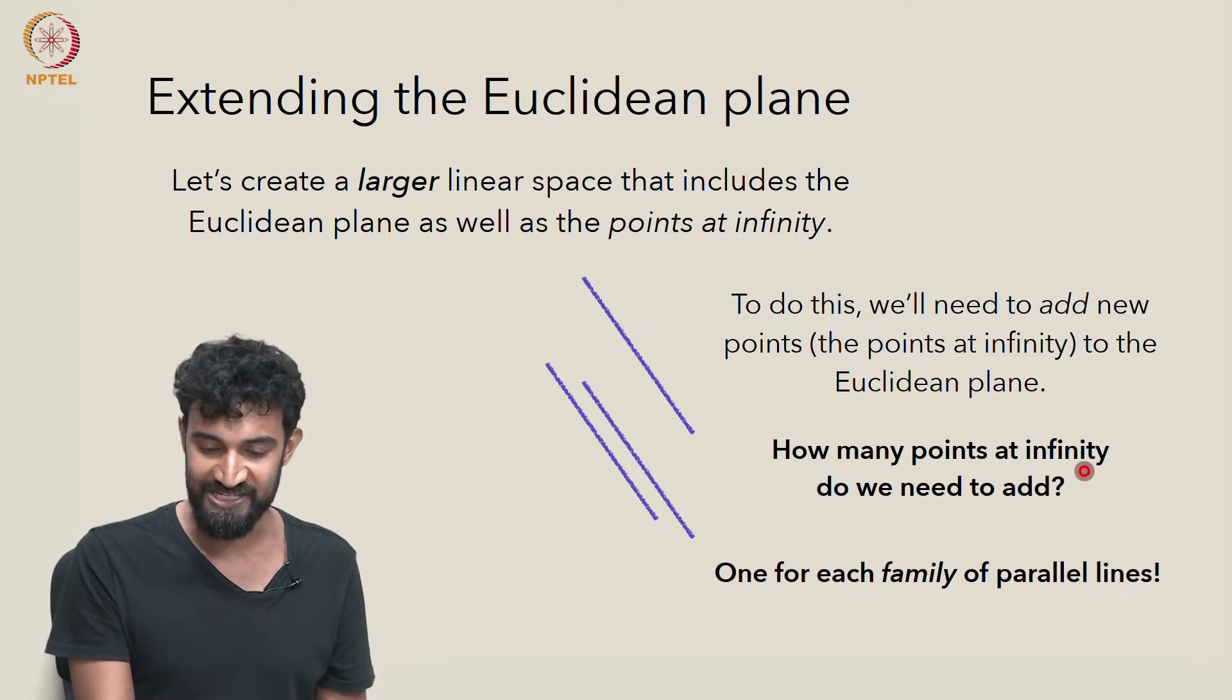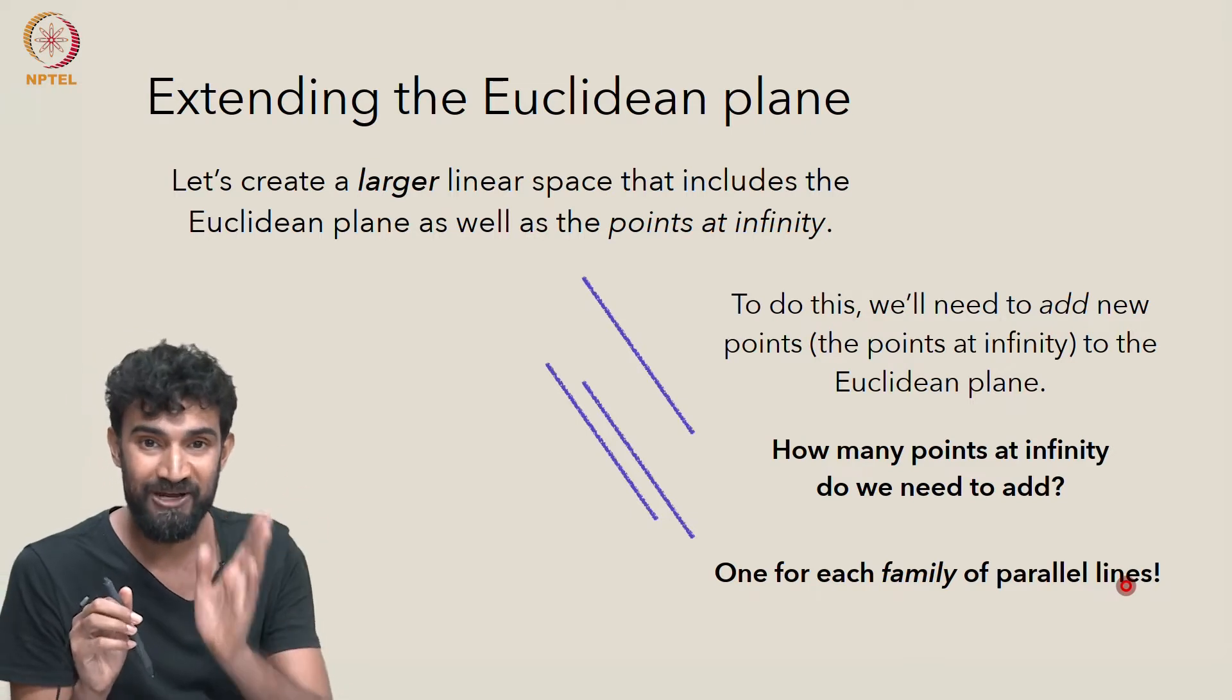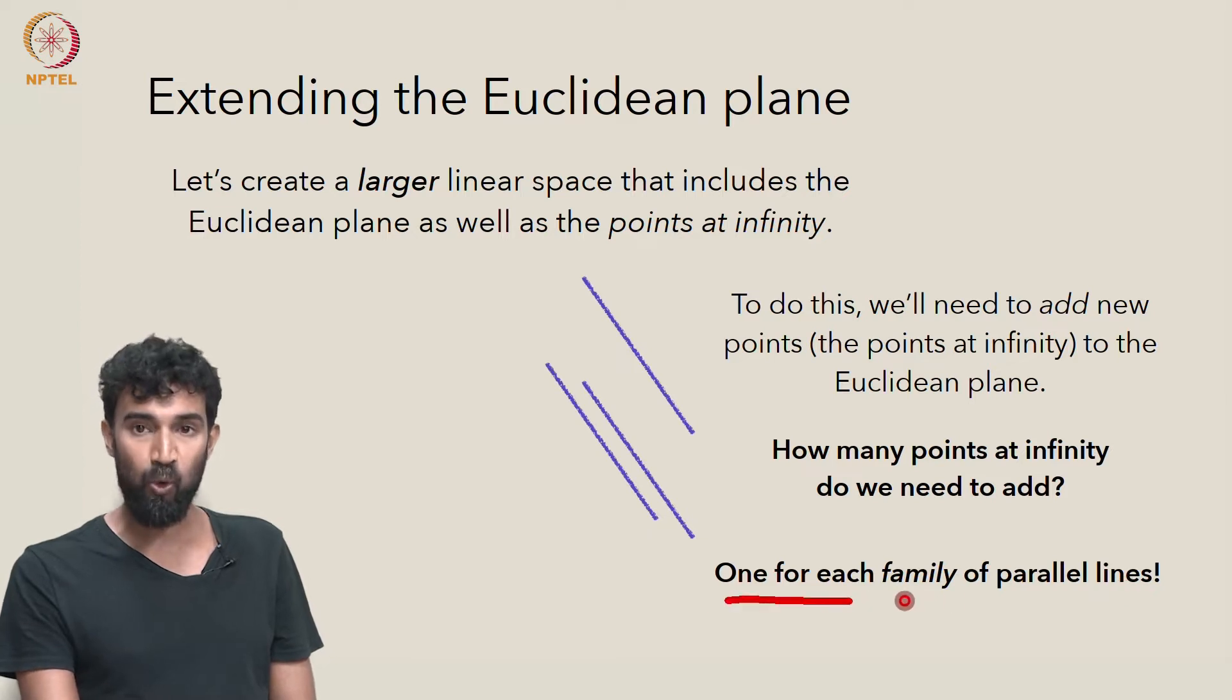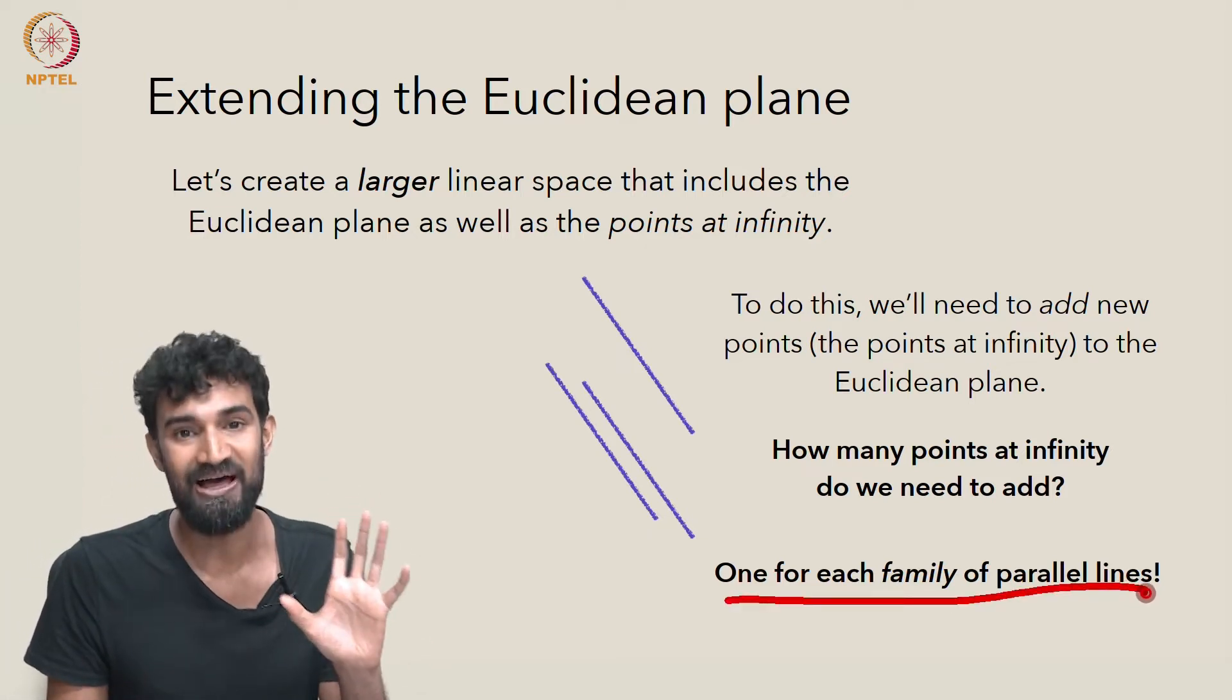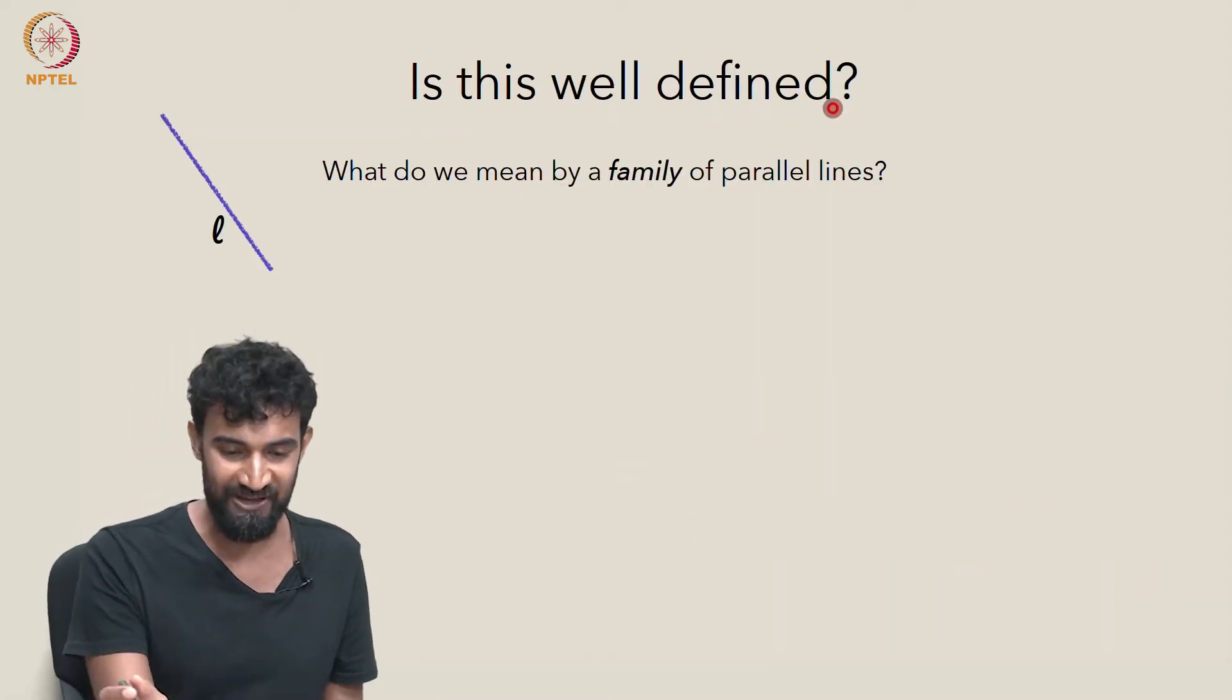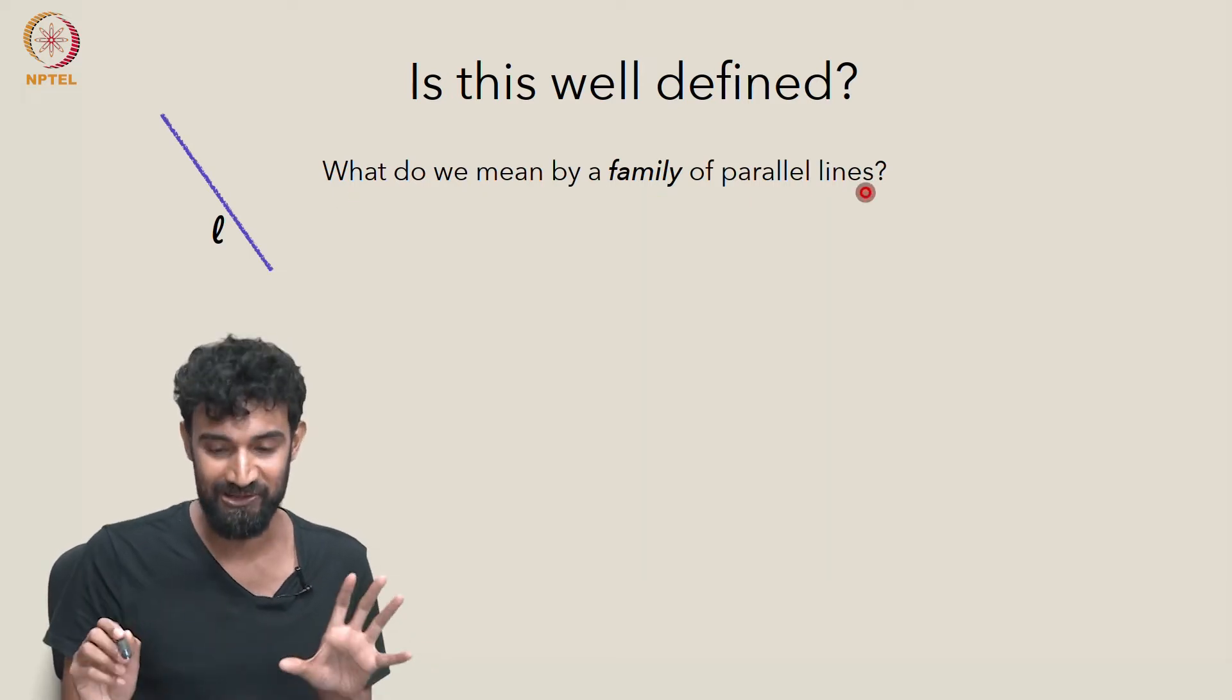How many new points do we need to add? Well, every family of parallel lines has a point at infinity associated to it. So we're going to have to add one point at infinity for every family of parallel lines. So how do we do this in a way that's well-defined, that's precise? And what do we even mean by a family of parallel lines?